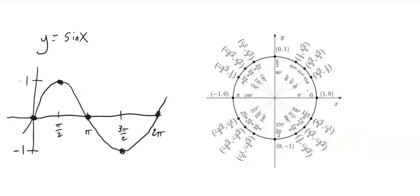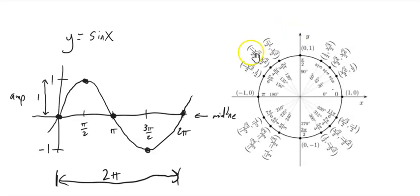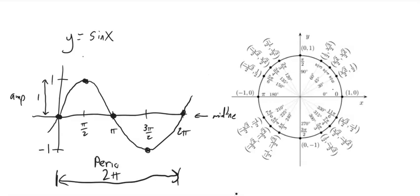There are a couple things to notice. It has an amplitude of 1 — from its midline, which is the middle line, it goes a distance of 1 in both directions. It also repeats itself every 2 pi, which makes sense: every full circle it starts to repeat. That 2 pi is the amount of time it takes to repeat itself, so it's called the period.